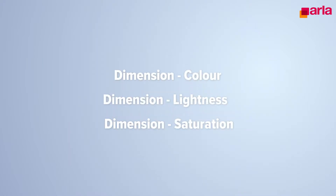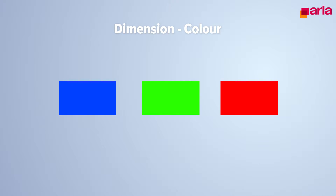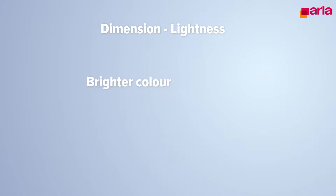Colors have three different dimensions. Dimension one is color — this is what we all use in our normal day of thinking of color, like blue, green, red, and so on. Dimension two is lightness. You can have a brighter or darker color. Simply explained, a brighter color is more white and a darker color is more black.